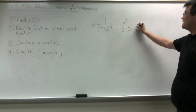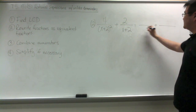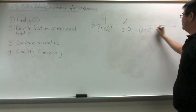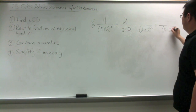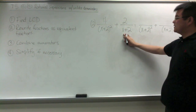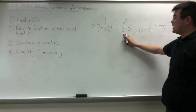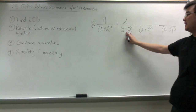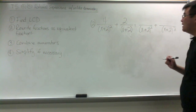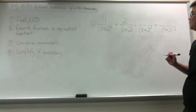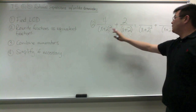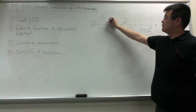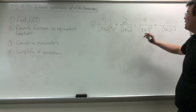In our next example, we're going to write the LCD. The LCD is (x plus 2) squared. It may be helpful that when the original problem has a binomial, putting parentheses around it helps you see more easily that it is the same binomial. Now, what times (x plus 2) squared would give us (x plus 2) squared? That would be 1, so 4 times 1 is 4.